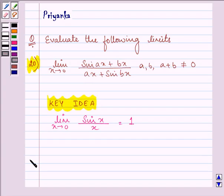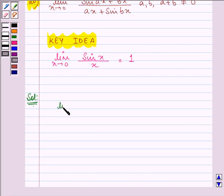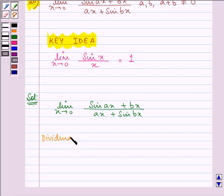Proceeding on with the solution. We are given in the question limit x approaches 0, sin ax plus bx upon ax plus sin bx. Now dividing the numerator and denominator by x,